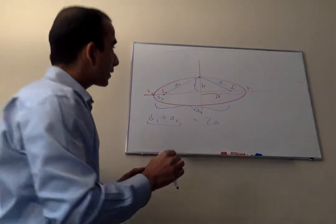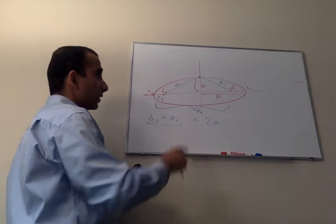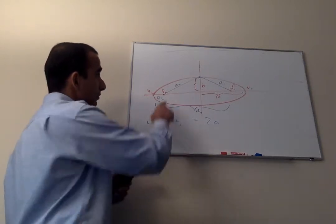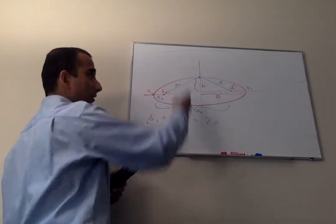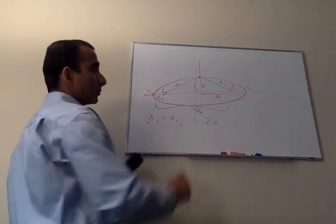But we know that D1 and D2 are equal. And I know my figure's not very good, but D1 and D2 are, in this particular case, because the foci is symmetric about the central axis, D1 is equal to D2.